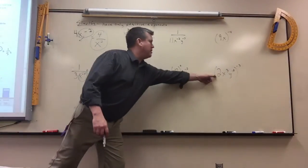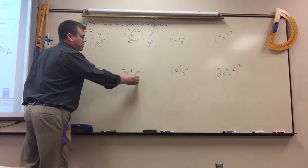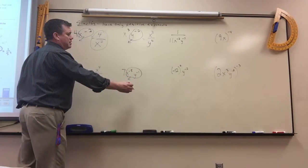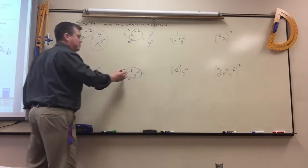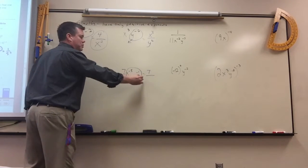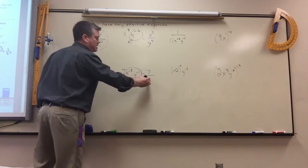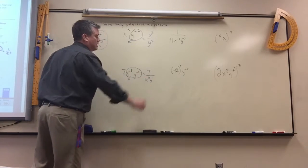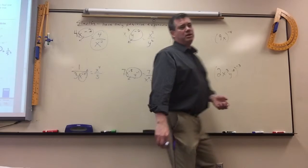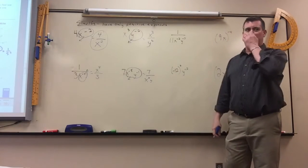There are a couple where you have to do more. This one, both of these are negative, so you just move them both underneath. The 7 would stay where it's at. These two would just move underneath and change to a positive 5 and a positive 1. If it is a 1, it's not wrong if you write it there, but you don't need it — you could leave the 1 off.